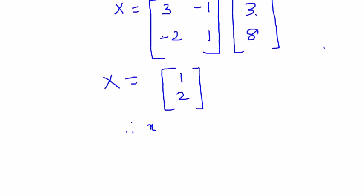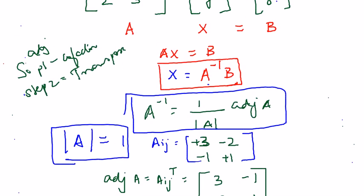And we knew that X matrix was nothing but x and y. Therefore x equals 1 and y equals 2. So we have solved this using matrix inversion method.